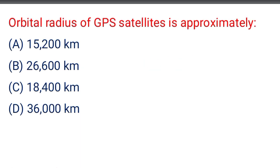Next question: the orbital radius of GPS satellite is approximately — option A: 15,200 km, option B: 26,600 km, option C: 18,400 km, option D: 36,300 km. The correct answer is option B: 26,600 km.